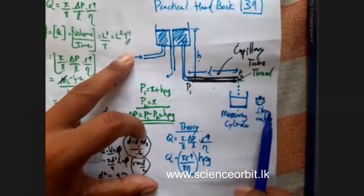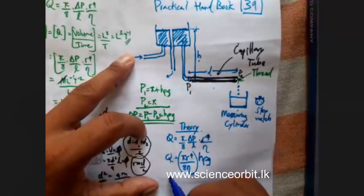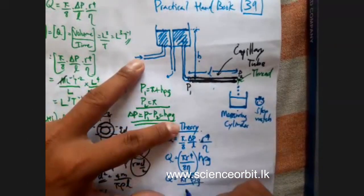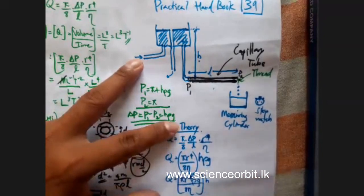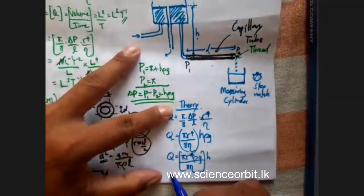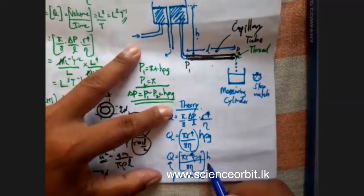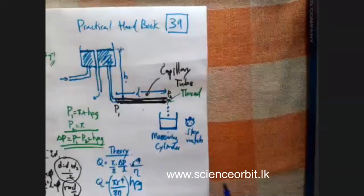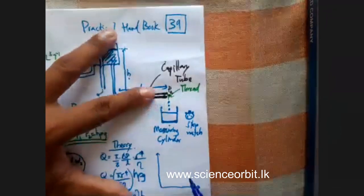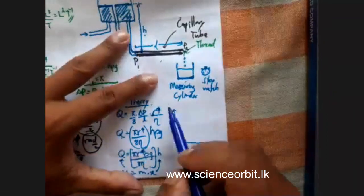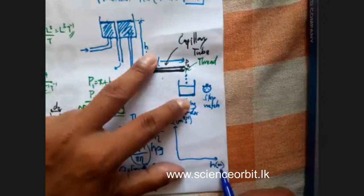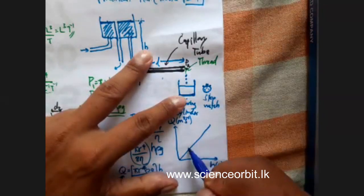This is the final equation, and if you check it, it is similar to y equals mx. Q will be on the y-axis and H on the x-axis. When you plot the graph, you will get Q in the y-axis in units of metre cubed per second, and H in the x-axis in metres, giving a straight line graph through the origin.